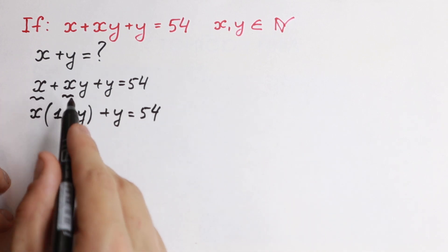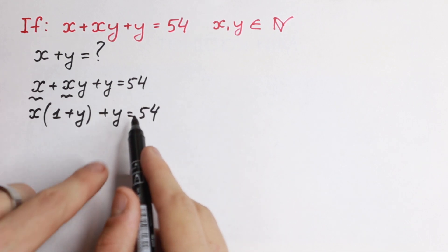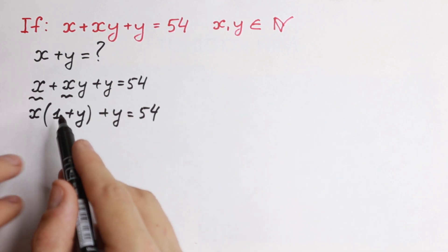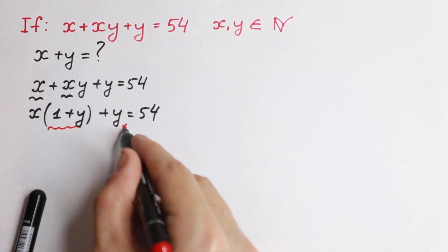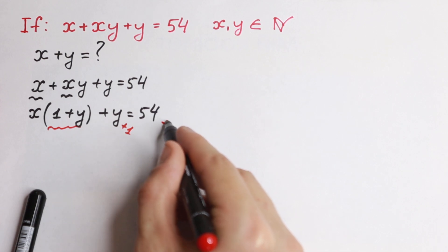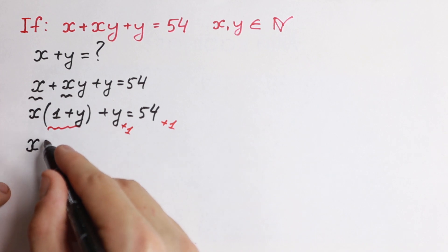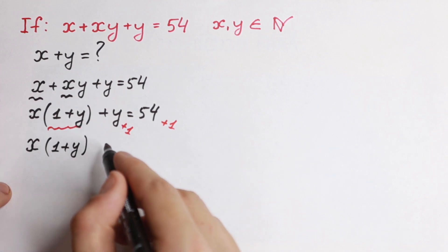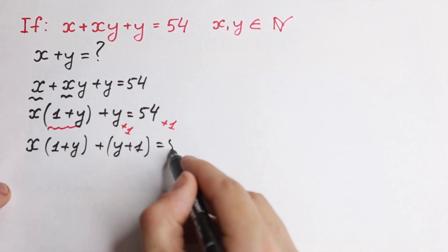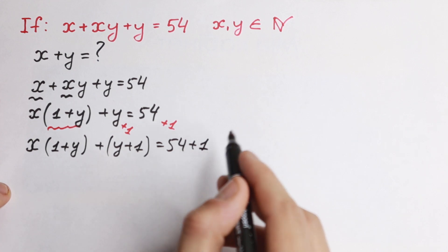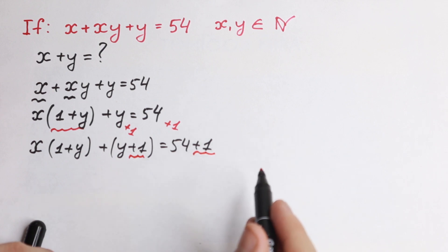I just factored out x from these two expressions. Take a look — right here we have y, and right here we have y as well, but we have (1 plus y) in these parentheses. So if we add 1 here and add 1 to the right side, we will have a really interesting case: x times (1 plus y) plus (y plus 1) equal to 54 plus 1.